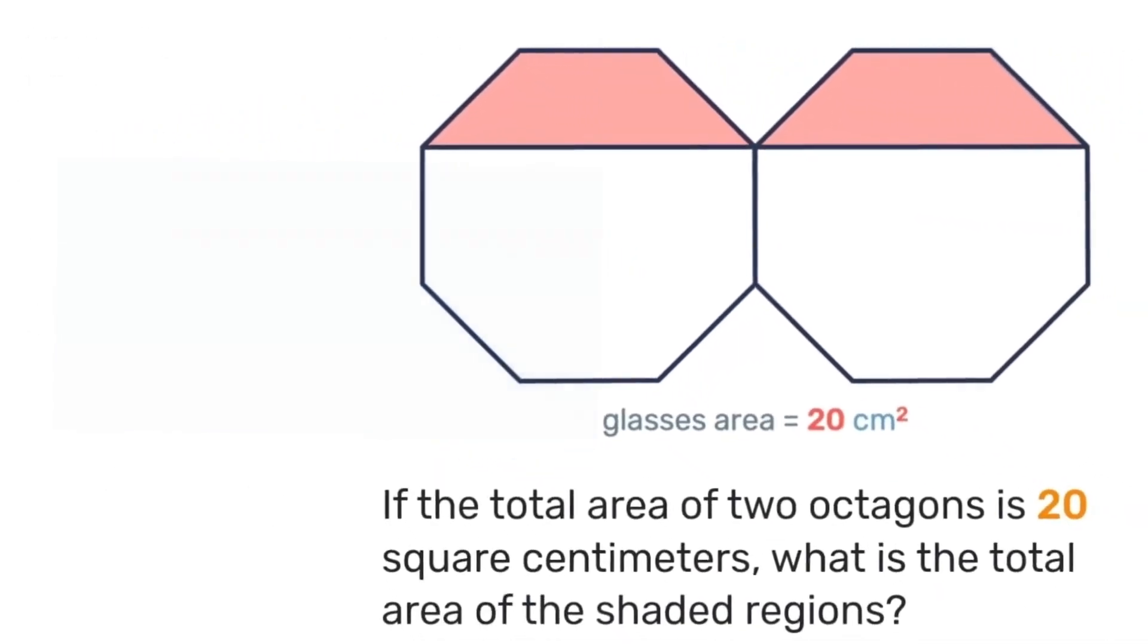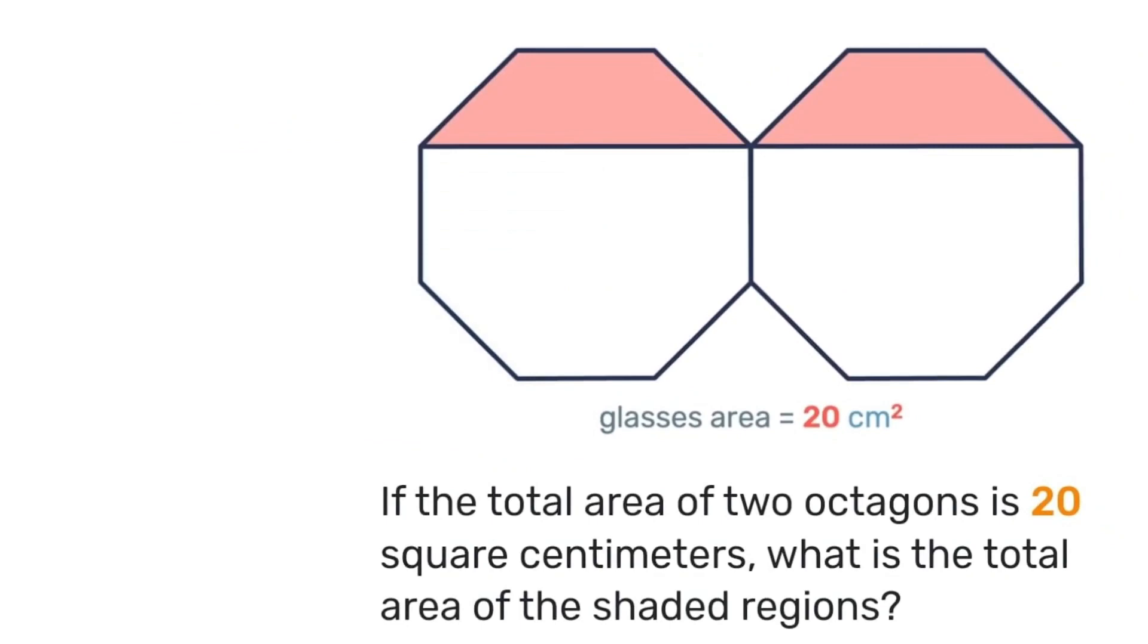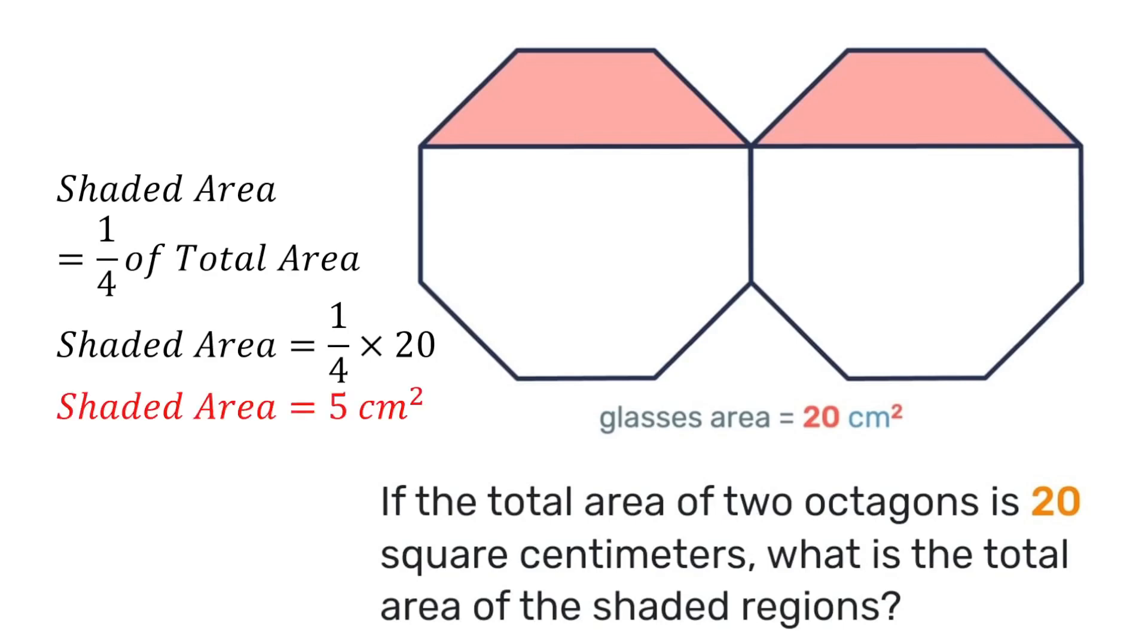Using that information, going back to our original problem, what will be the total area of the shaded regions? Well since both octagons are identical, then the shaded area will be one fourth of the total area. But the total area we know is 20 square centimeters. So one fourth of 20 gives us that the shaded area is five square centimeters.